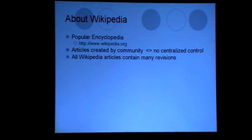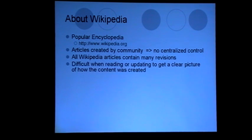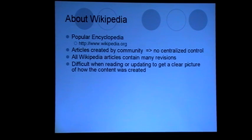When we look at a Wikipedia article we can see that there are many revisions, and it's difficult to get a clearer picture of how an article has reached its current state of being, because it's difficult to see the path by which different people have edited, amended, deleted and corrected points in an article.